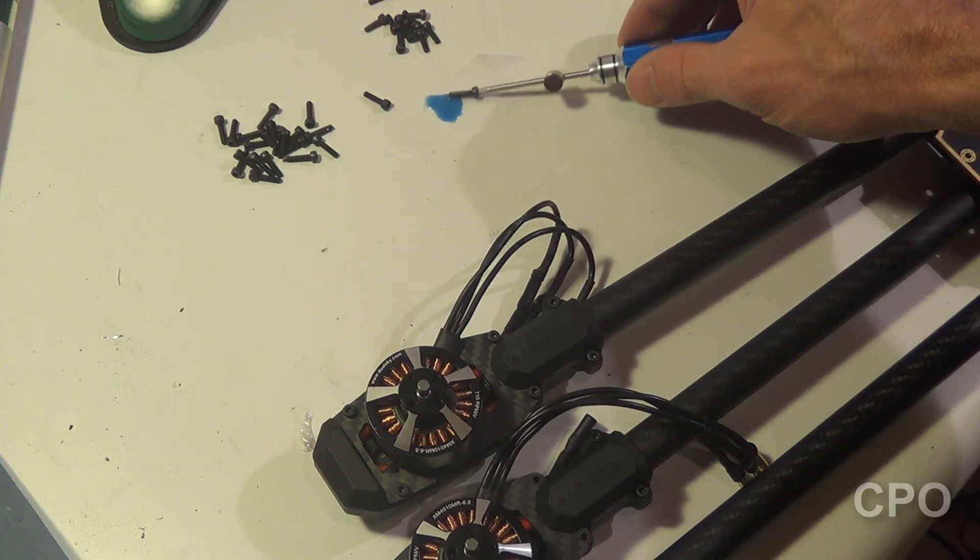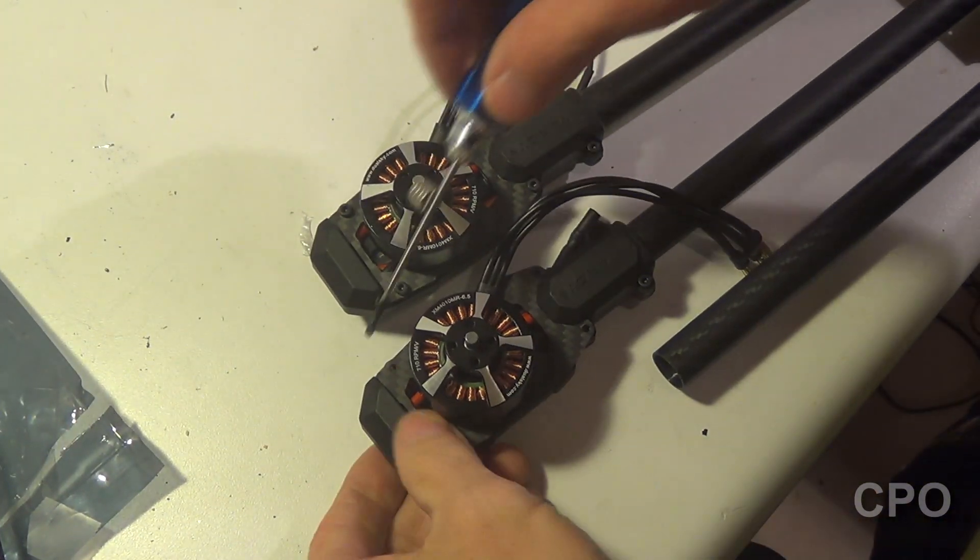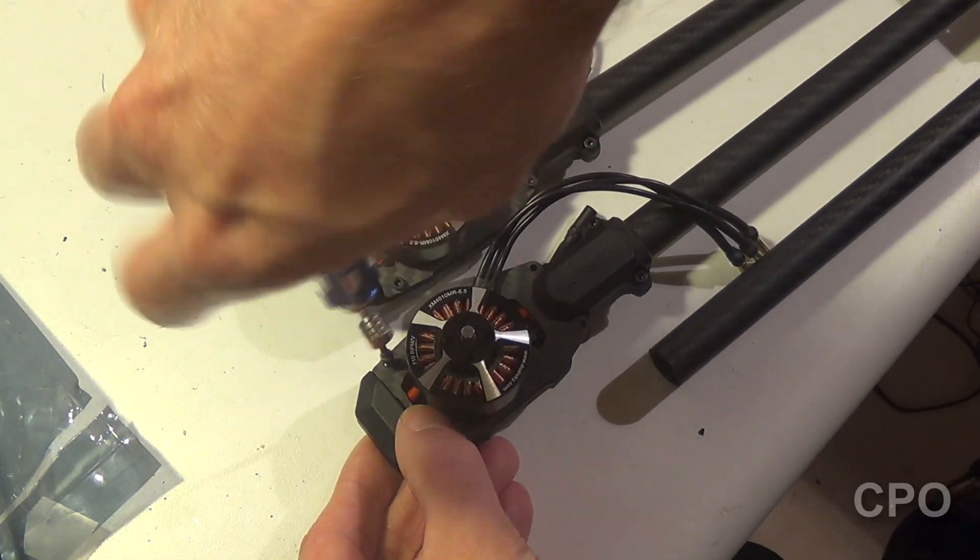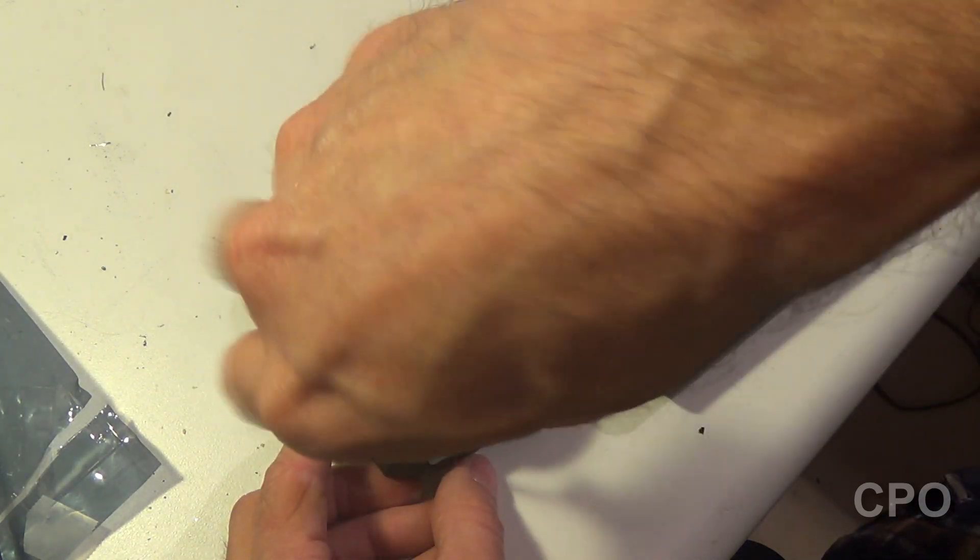A little bit of thread lock. And these are the 10mm screws again. And I'm using thread lock on the outermost because those are just tighten them down and be done with it.